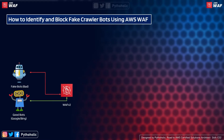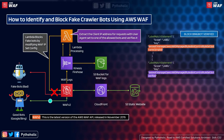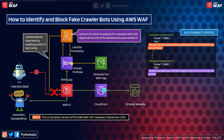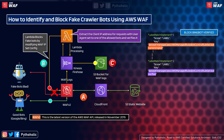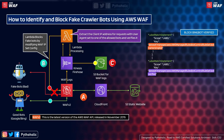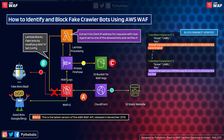Now let's see the architecture for identifying and blocking fake crawler bots using AWS WAF. There are two primary sources of information to identify a fake bot: first, the HTTP header user agent — fake bots can use user agent strings similar to popular browsers like Mozilla 5.0, specifying the machine, Chrome version, or Apple WebKit. This information can be simulated from a real device. If the data resembles that of Googlebot or Bingbot, you can detect it as a fake bot trying to impersonate a valid one.